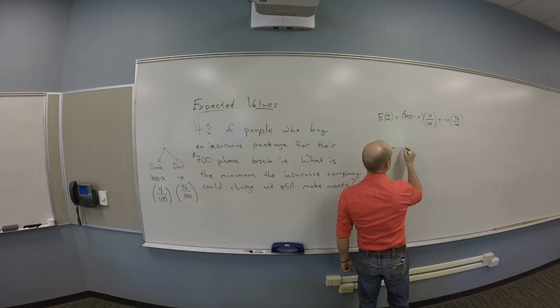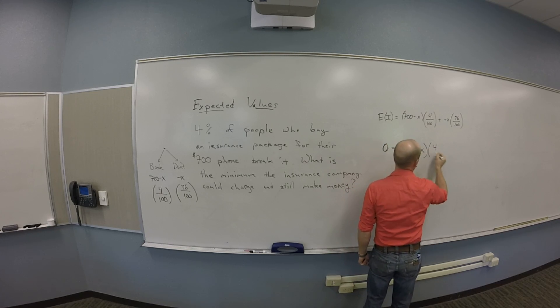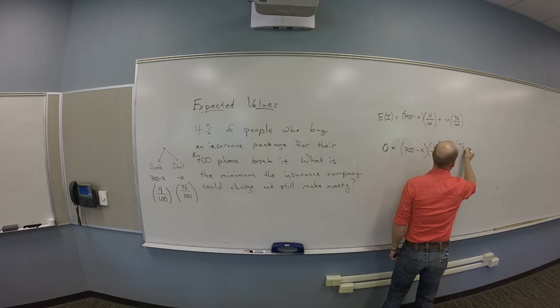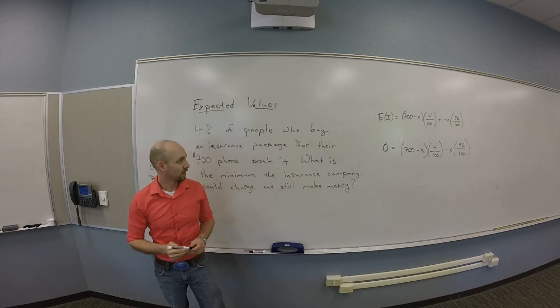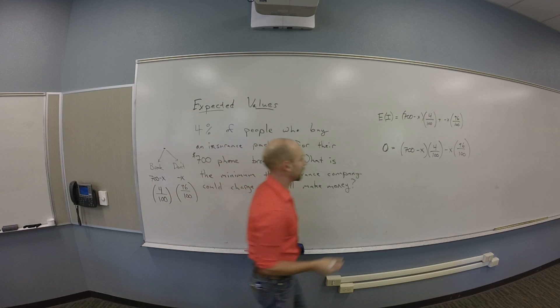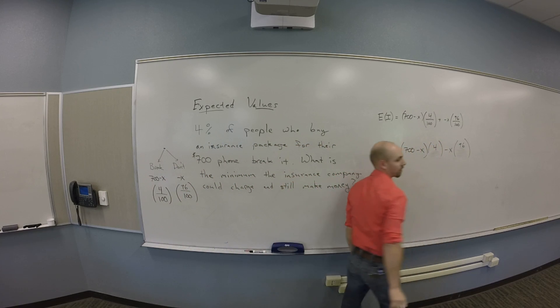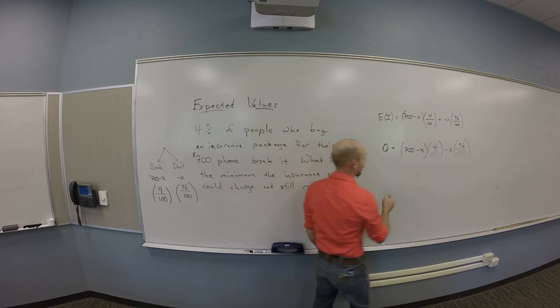So I think I have zero is 700 minus X times 4 over 100 minus X times 96 over 100. And I'm looking to solve this. So how do I go about solving this thing? You can multiply both sides by 100. Let's clear the bottom. That's a good idea.